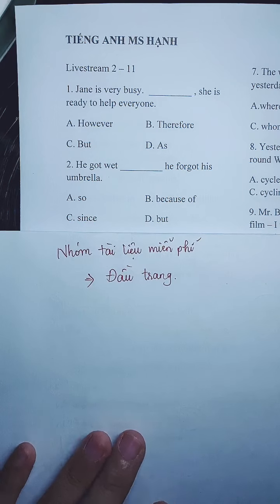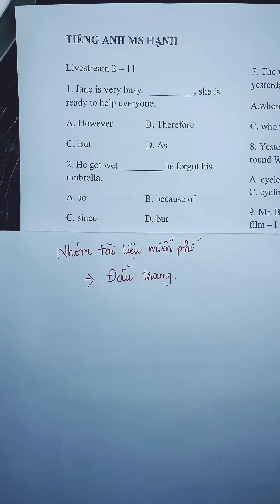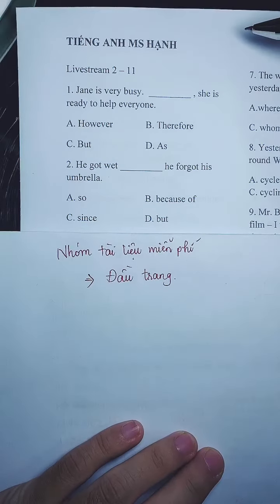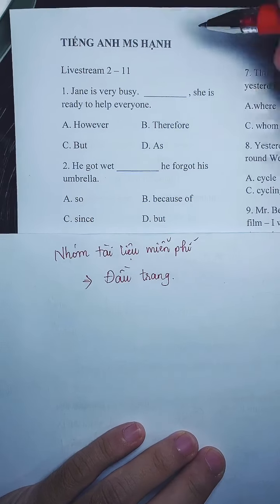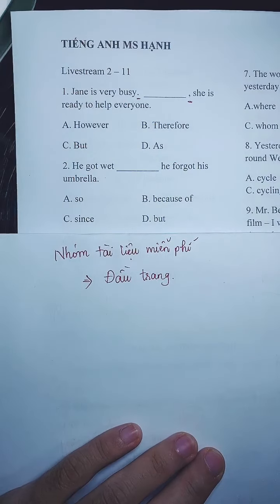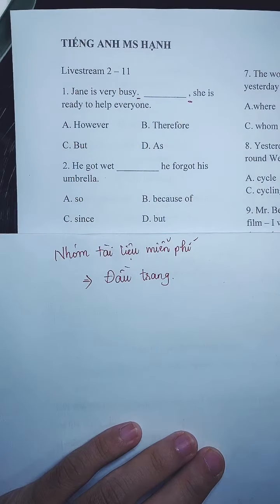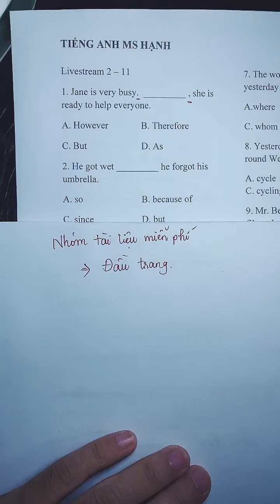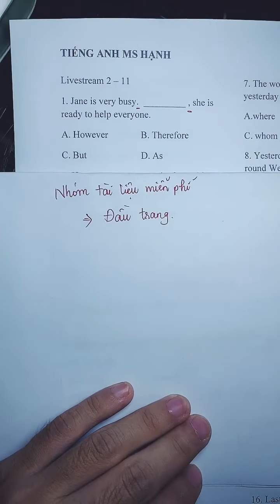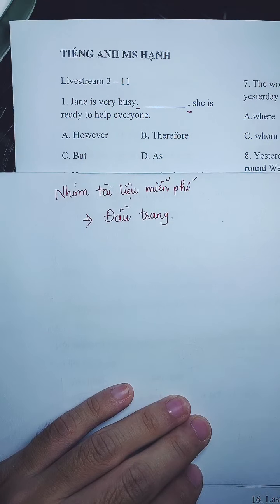Đầu tiên chúng ta có câu số 1 là về liên từ. Bây giờ chúng ta sẽ xem câu 1 về liên từ. Bạn sẽ dịch nghĩa ra và xem vị trí của các dấu câu nữa, thì mình sẽ chọn được liên từ phù hợp. Đây là những câu hỏi thường xuất hiện trong đề kiểm tra. Câu này cấp 2, cấp 3 có thể học, hoặc các bạn đại học cũng có thể học.